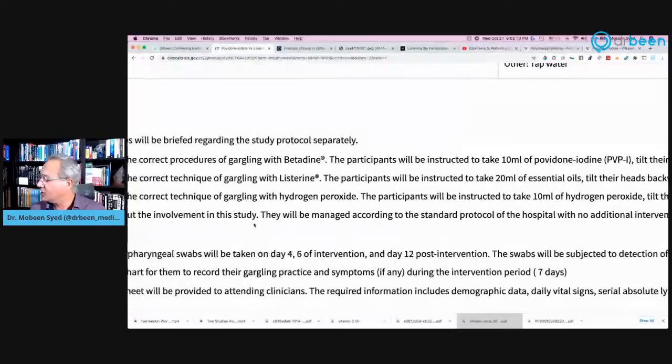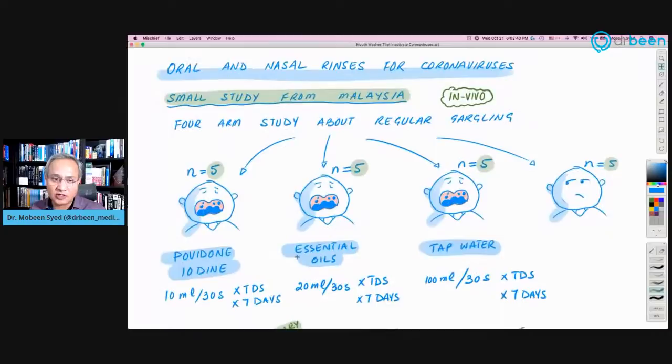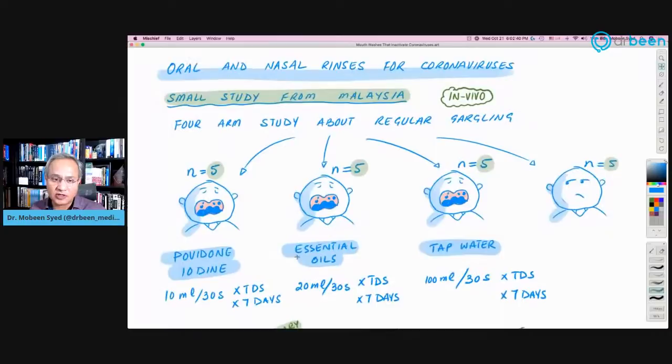So let's very quickly look at the study itself from my little diagrams here. So here is what they did. Small in vivo study, that is the importance of this study. Four groups, one group, five patients only. They were confirmed patients. All the patients here in all the groups were confirmed patients. They were given povidone iodine. This is the same iodine that is also used in hospital setting for cleaning the wounds or for antiseptic tincture before surgical procedures. And they were given 10 milliliter for 30 seconds, thrice a day for seven days.